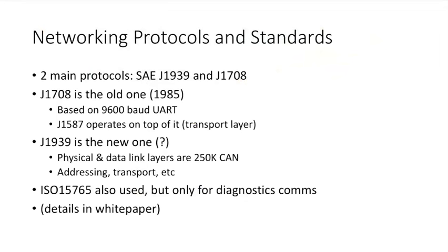The two main networking protocols: J1708 is RS-485-ish at 9600 baud. There are some slight transceiver differences, and SAE standard J1587 specifies everything all the way up to the application layer. J1939 is similar but built on 250K CAN — passenger cars are 500K for reference. We also see ISO 15765, but only for diagnostic communications. Details on all the protocol specifics will be in the white paper — we should give you enough information to write your own implementation.